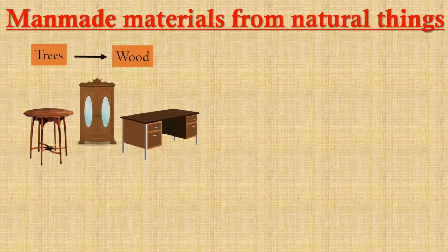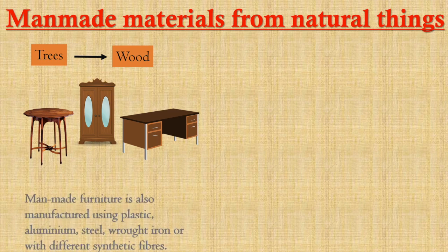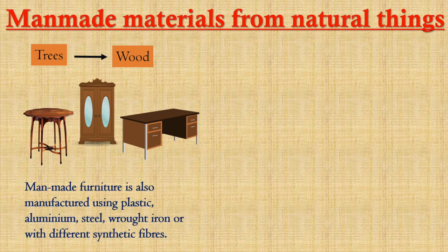Let us see some examples of man-made materials manufactured from natural things. First is wood. Wood is a natural material we derive from trees, and we can later use it for the manufacture of different furniture items. But nowadays, man-made furniture is also manufactured using plastic, aluminium, steel, wrought iron, or different synthetic fibers — so these are artificial furniture materials.